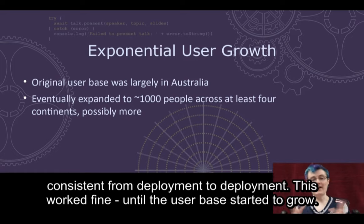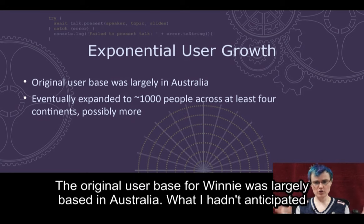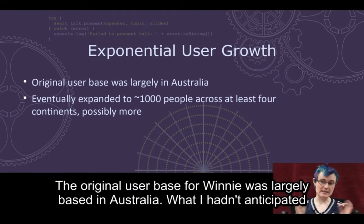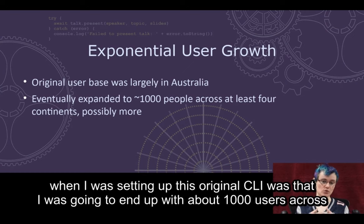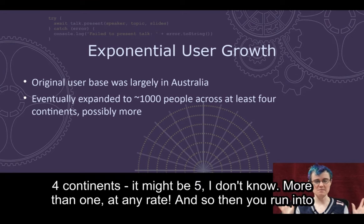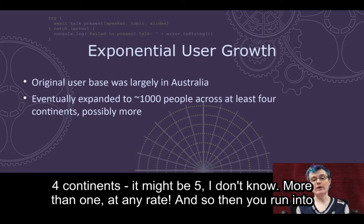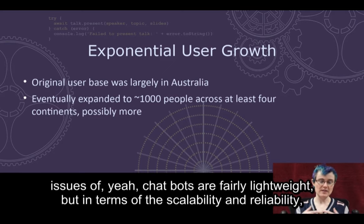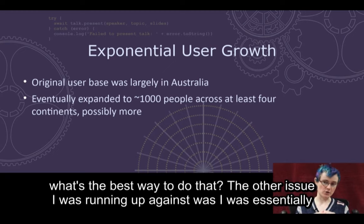This worked fine until the user base started to grow. The original user base for Winnie was largely based in Australia. What I hadn't anticipated when setting up the original CLI was that I was going to end up with about a thousand users across four continents — it might be five. Chatbots are fairly lightweight, but in terms of scalability and reliability, what's the best way to handle that?